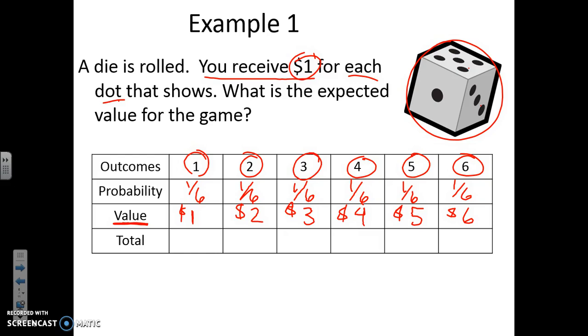Now all you have to do to figure out what your total is, is multiply these things together. So again, one-sixth times one, and it doesn't matter what order you put it in.